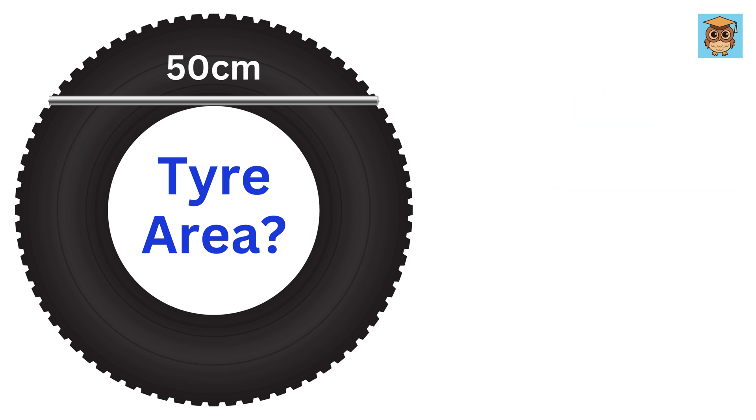Before we start, let us convert this tire and this rod into geometrical shapes like circle and line. Now, label the radius of the inner circle as a, and that of the outer circle as b.